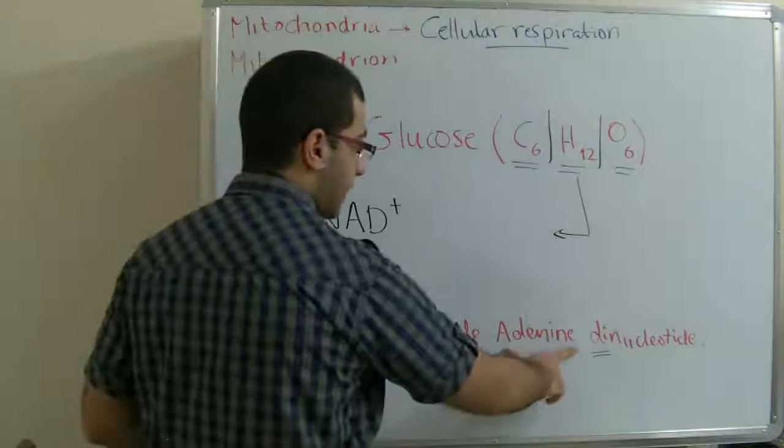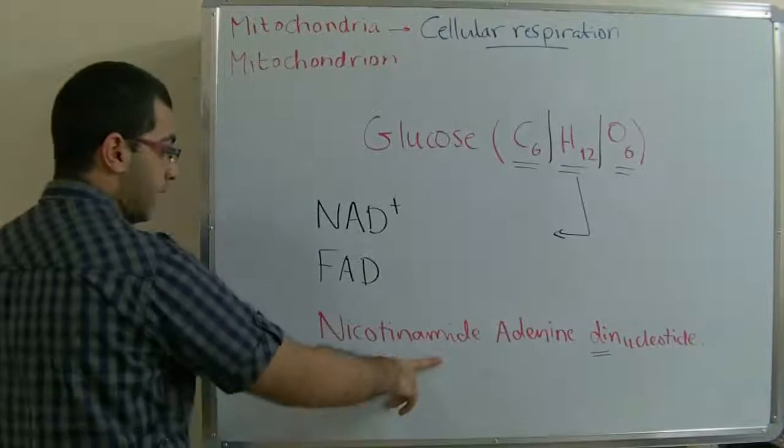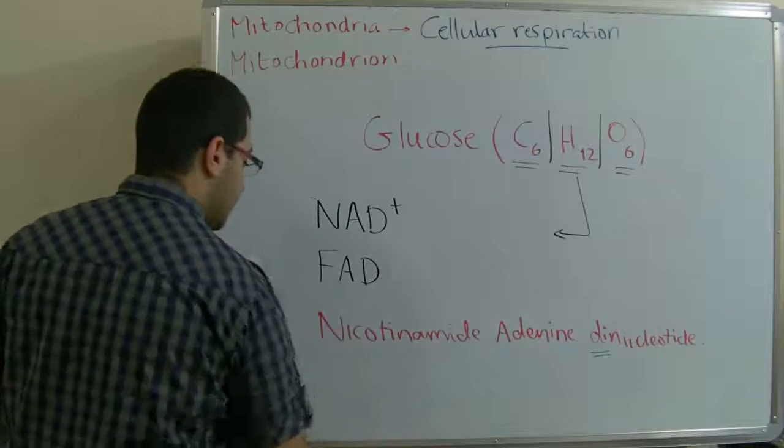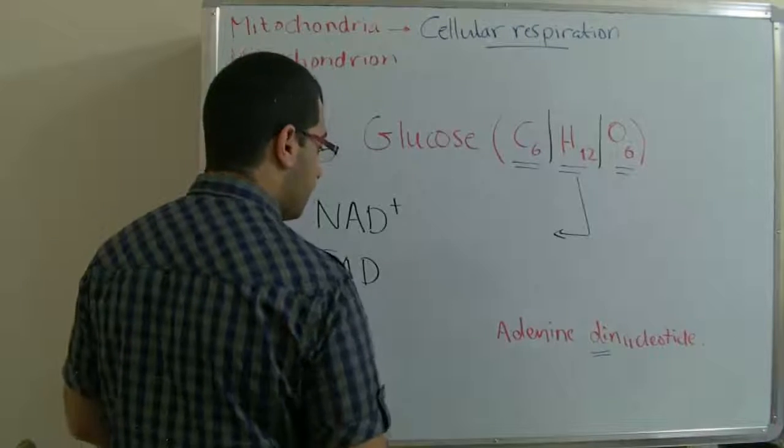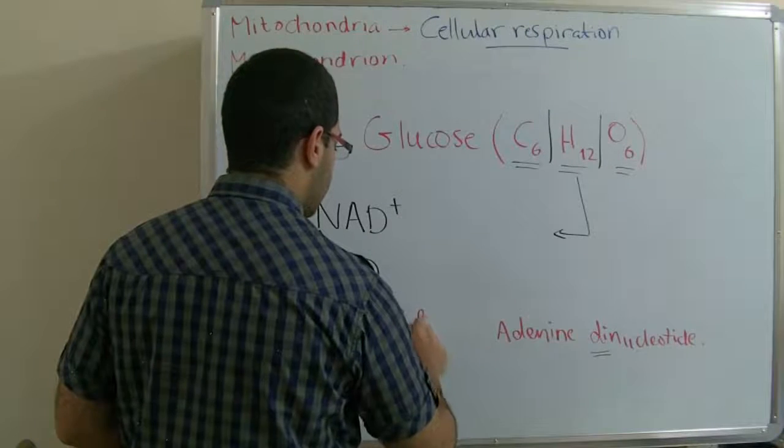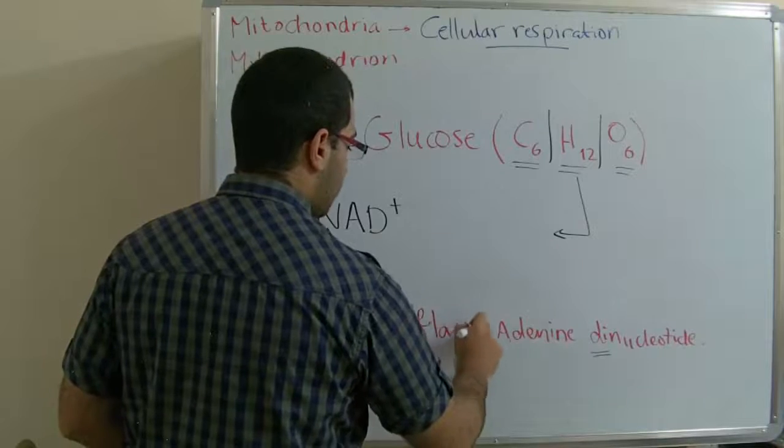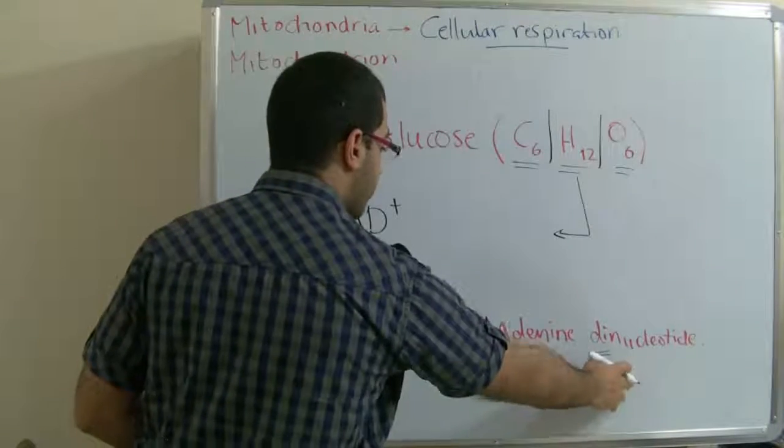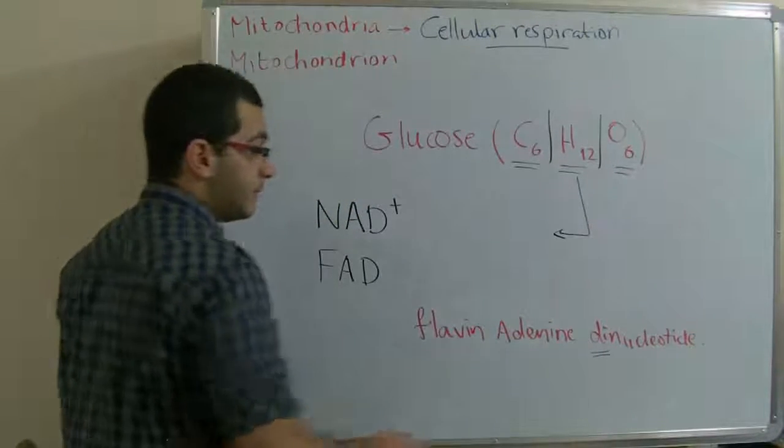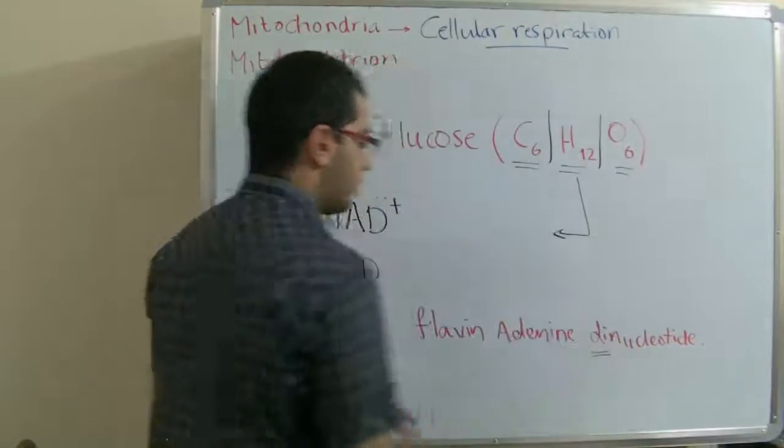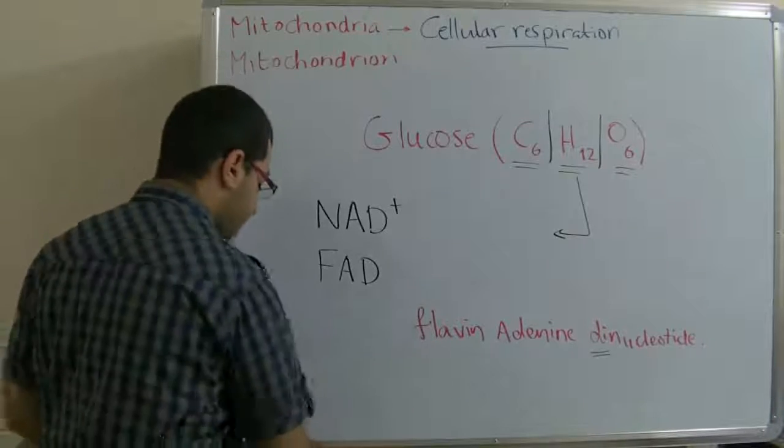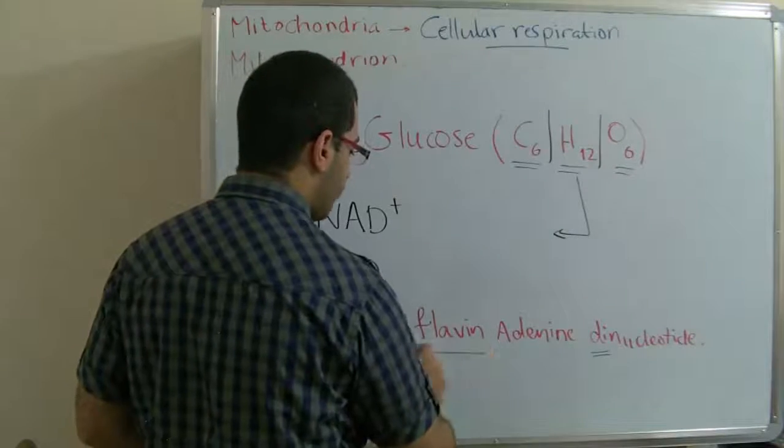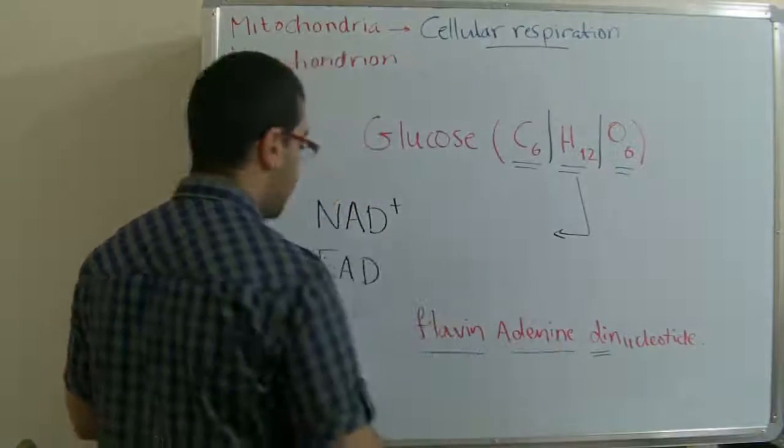This is an important hydrogen carrier, and it's called dinucleotide because it consists of two nucleotides binding together with their phosphate group. One nucleotide containing adenine, and the other containing nicotinamide. Well, FAD stands for flavin adenine dinucleotide. It's a dinucleotide because it consists of two nucleotides binded with their phosphate groups. One consists of flavin, and the other of adenine.